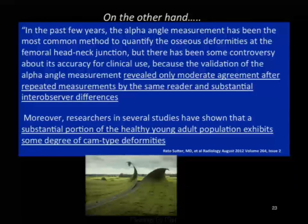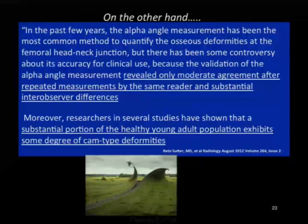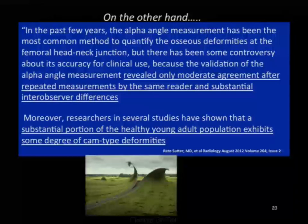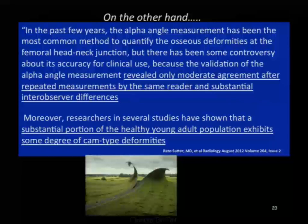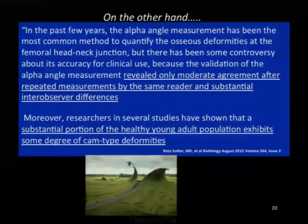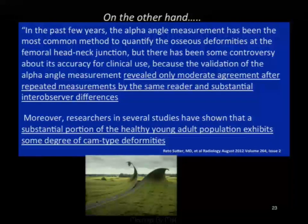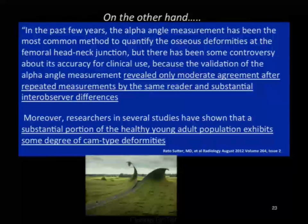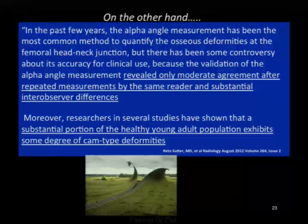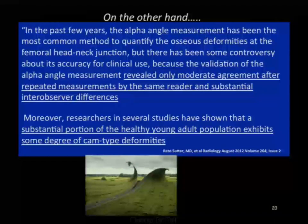The alpha angle is a crude measure, performed on one slice of an oblique axial image. CAM deformities can happen anywhere in the anterosuperior aspect of the head-neck junction. There is significant discussion about what constitutes diagnosis of a CAM lesion, and the field is moving toward 3D reconstruction post-processing tools that allow assessment of where the normal head-neck offset is lost. We see CAM deformities in nearly all of our water polo players at Stanford.